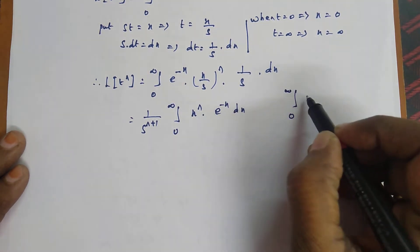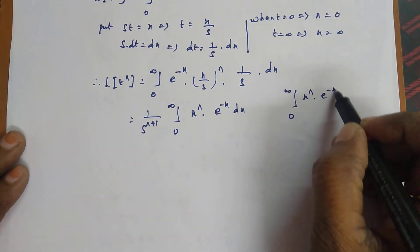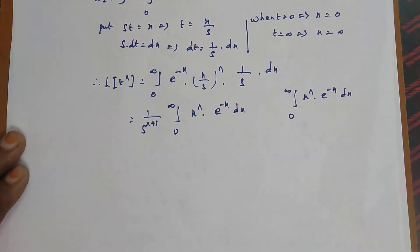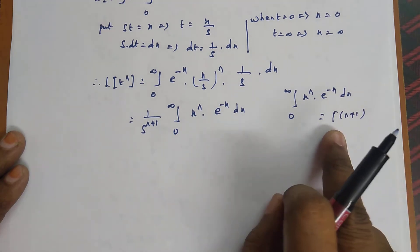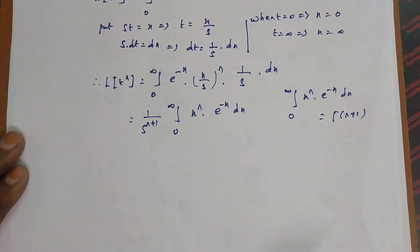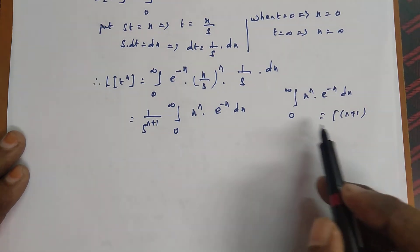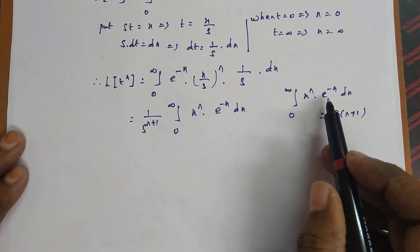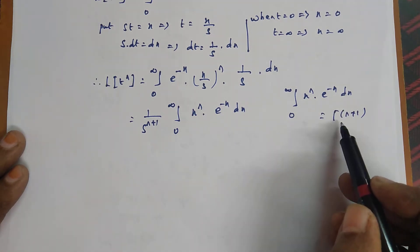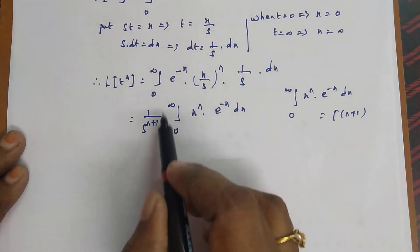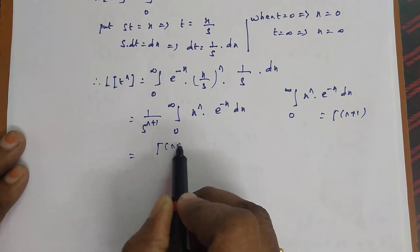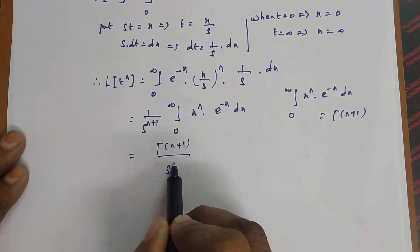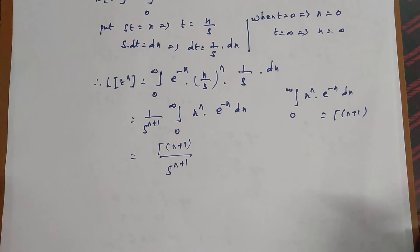Now, the integral from 0 to infinity of x power n into e power minus x dx is nothing but gamma of n plus 1 — that is capital gamma. So integral from 0 to infinity of x power n e power minus x dx equals gamma of n plus 1. Instead of this integration, we replace it with gamma of n plus 1, giving gamma of n plus 1 divided by s power n plus 1. This is the first part of the proof.